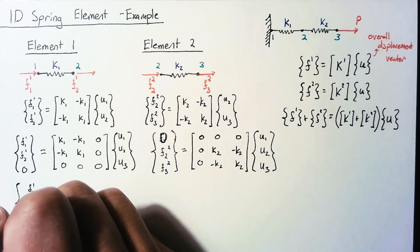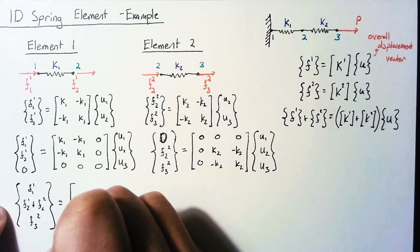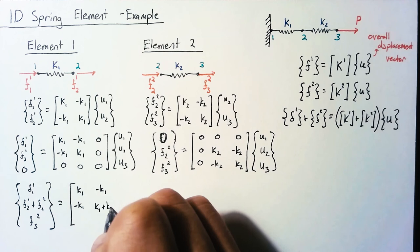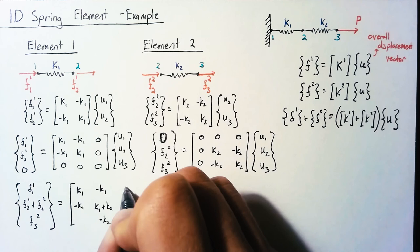We add our two stiffness matrices together. So we have the k1, negative k1, negative k1, here we have both a k1 and a k2. We have our negative k2, negative k2, and then positive k2 with zeros in the two corners. And then our displacement vector is our overall displacement vector. This is our full system of equations.